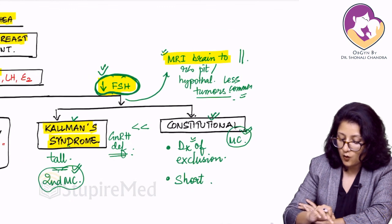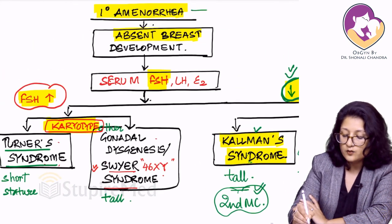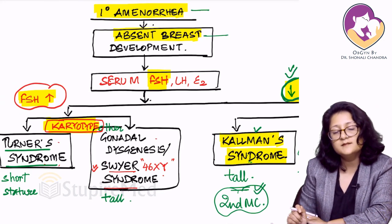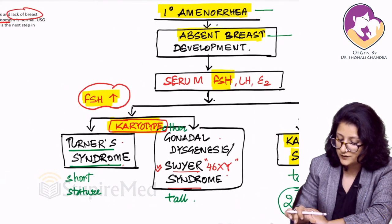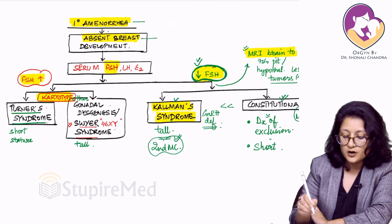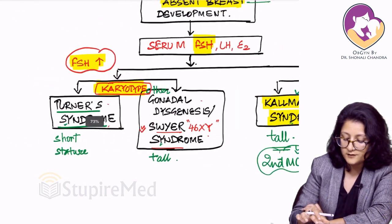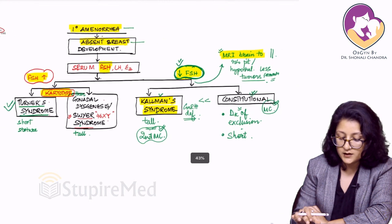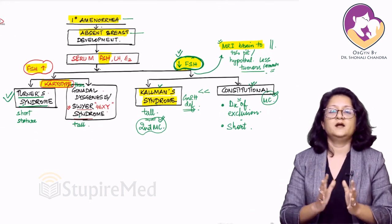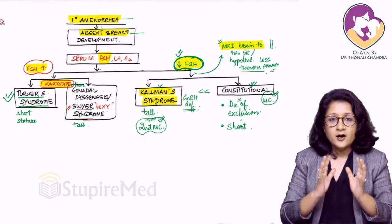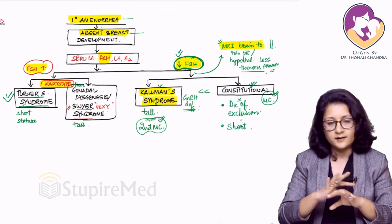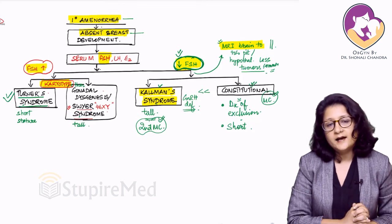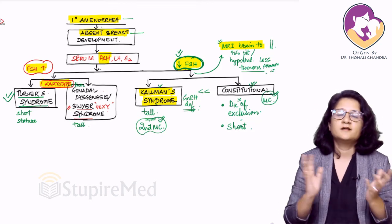Overall, in primary amenorrhea with absent breast development or lack of secondary sexual characteristics, among all four conditions — constitutional, Kallmann's, Turner's syndrome, and other gonadal dysgenesis — the most common is Turner's syndrome. This is how we proceed through the evaluation of primary amenorrhea. Each of these individual conditions needs to be separately studied in detail.